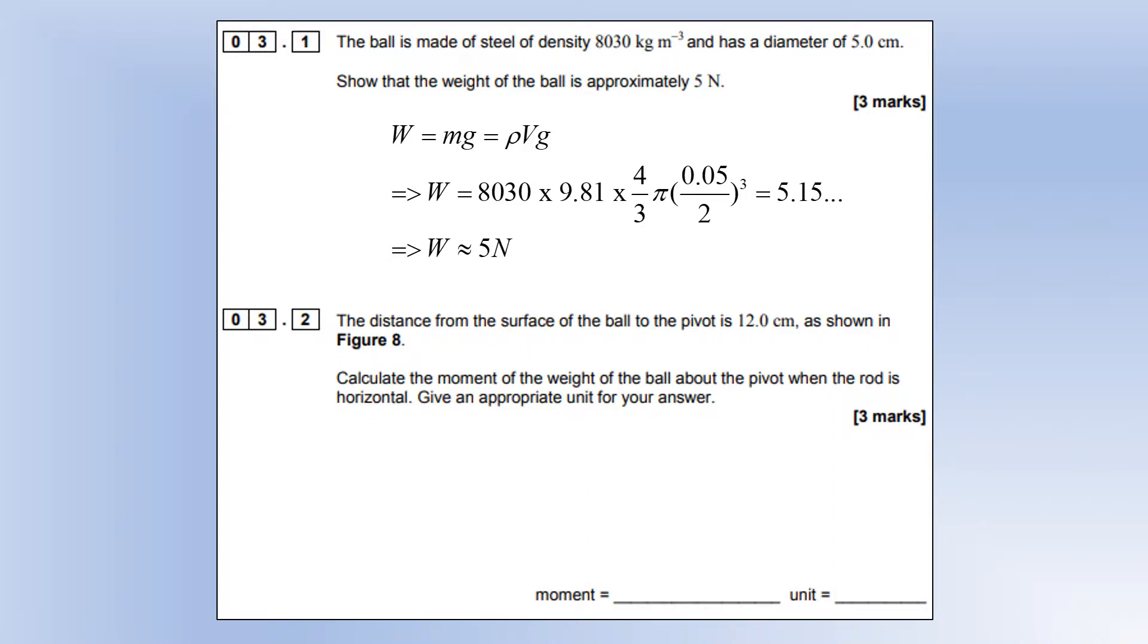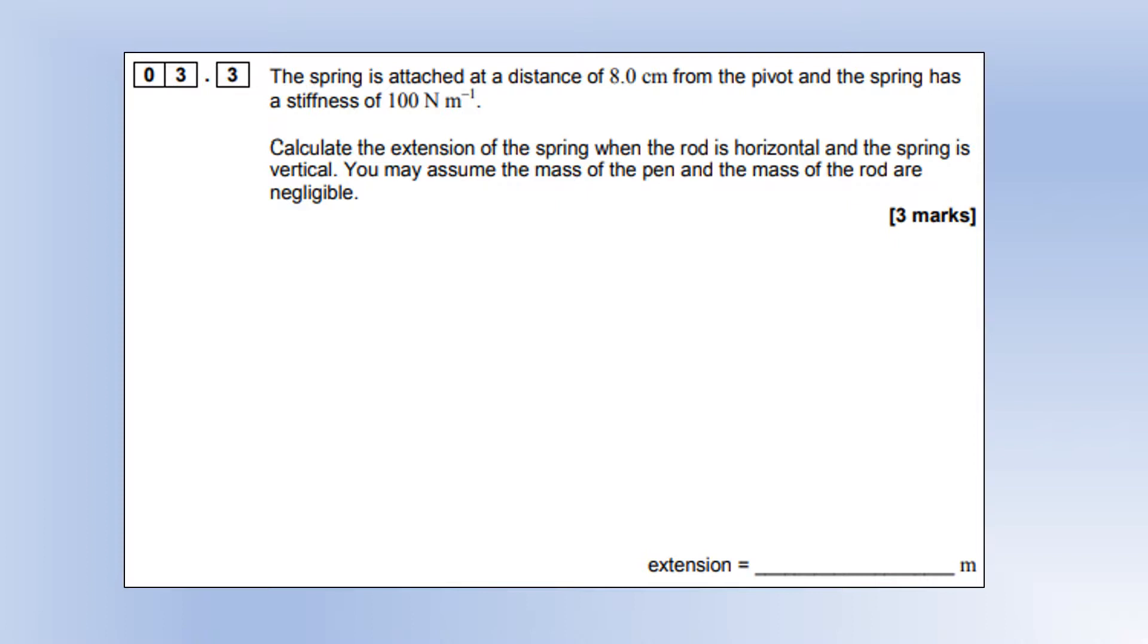The distance from the surface of the ball to the pivot is 12 centimeters. Calculate the moment of the weight of the ball about the pivot. First, find the distance from the center of mass to the pivot by adding the radius to the 12 centimeters. Once you do that, calculate the moment in newton-meters. The spring is attached 8 centimeters from the pivot and has stiffness 100 N/m. Calculate the extension when the rod is horizontal and the spring is vertical, assuming the pen and rod mass are negligible. In equilibrium, the spring's moment equals the ball's moment. Dividing by the distance gives the spring force, and dividing by the spring constant gives the extension.